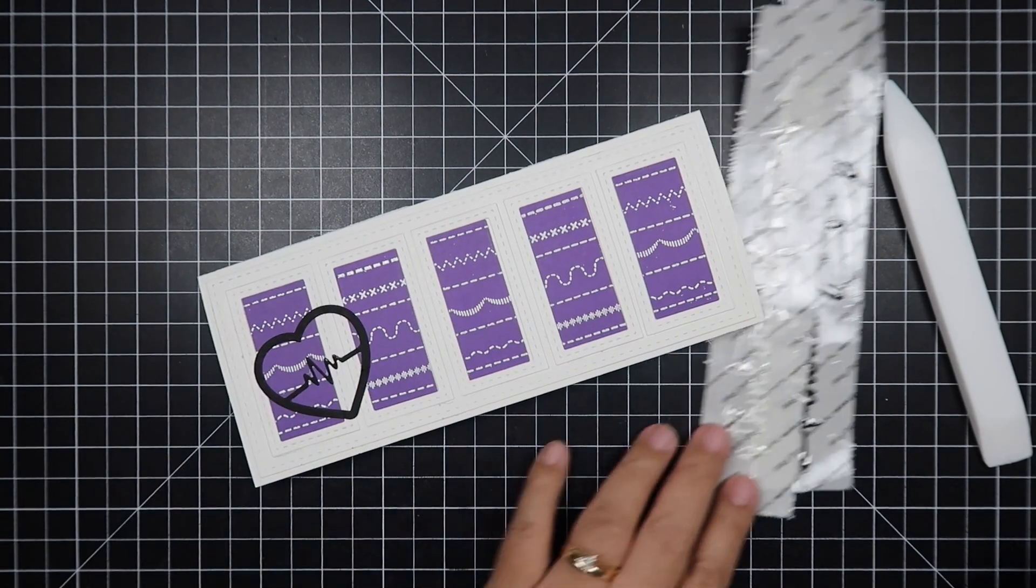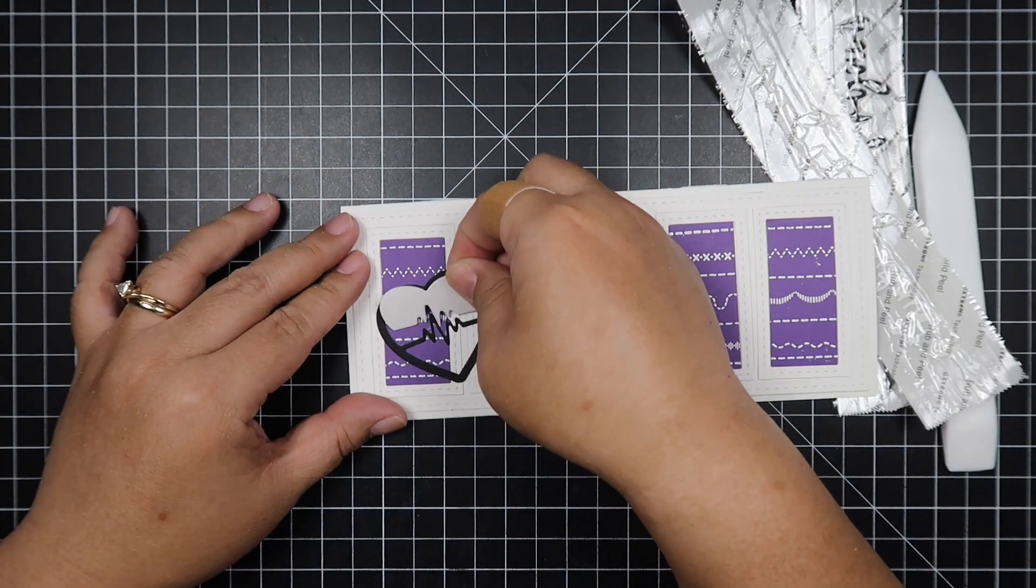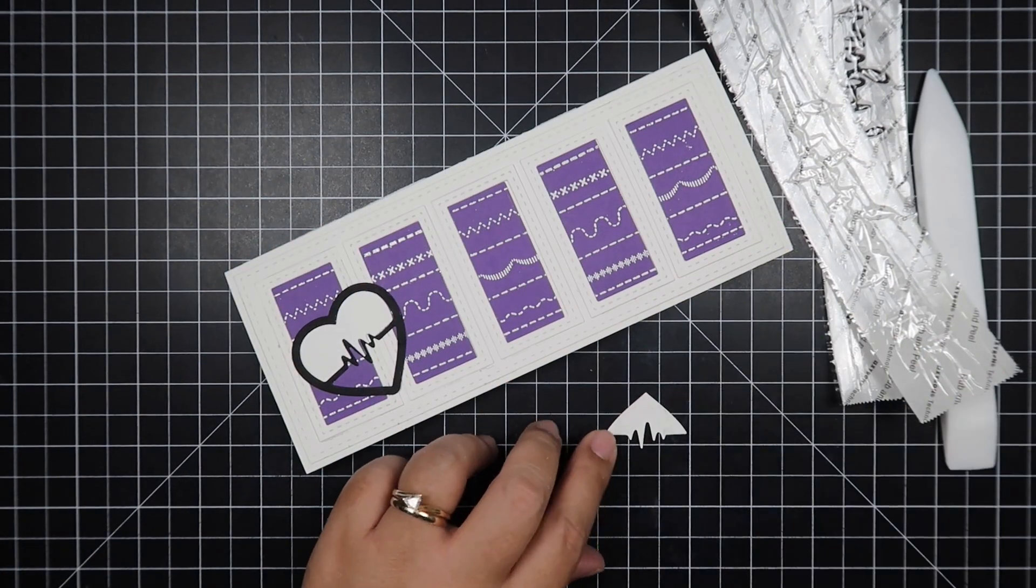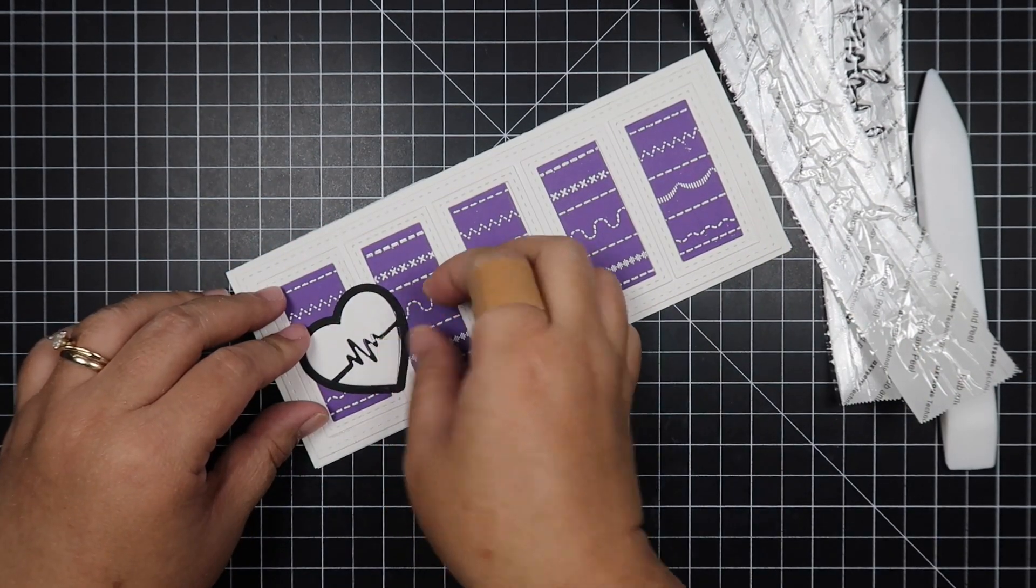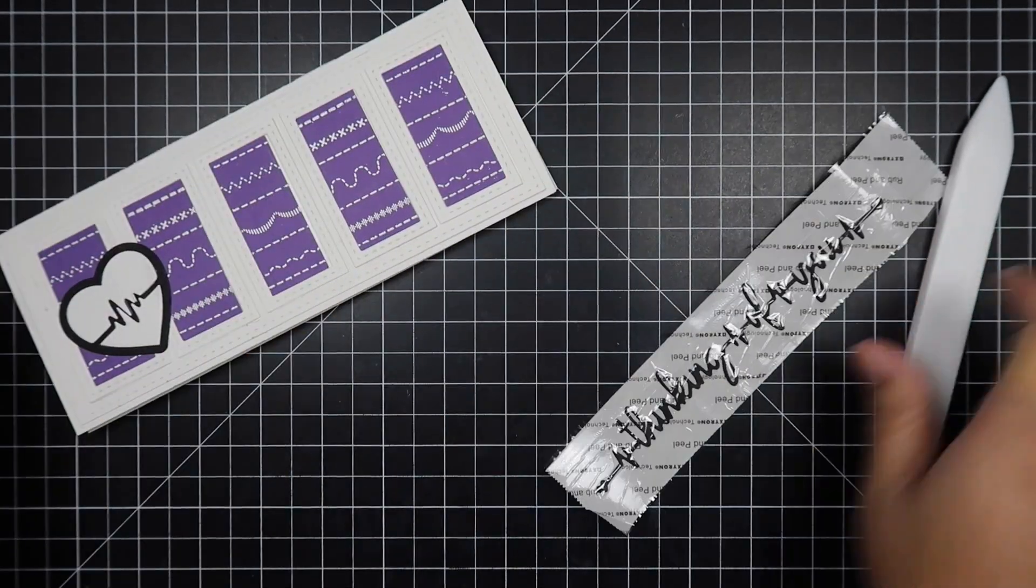Now I'm just going to adhere this heart on the left side, and then I'm going to inset my white cardstock inside. Our card is coming together beautifully. All we have to do is add our sentiment.